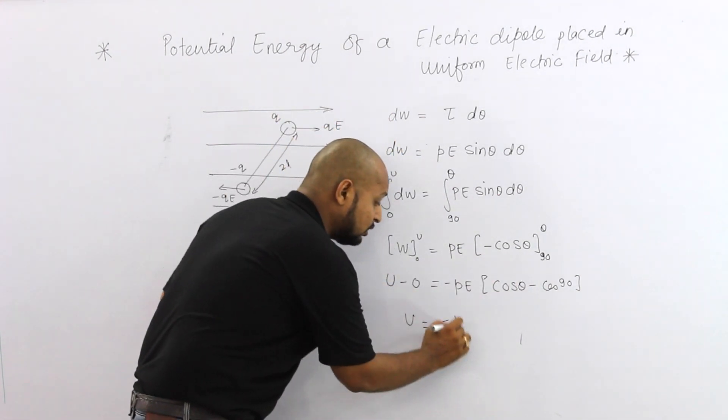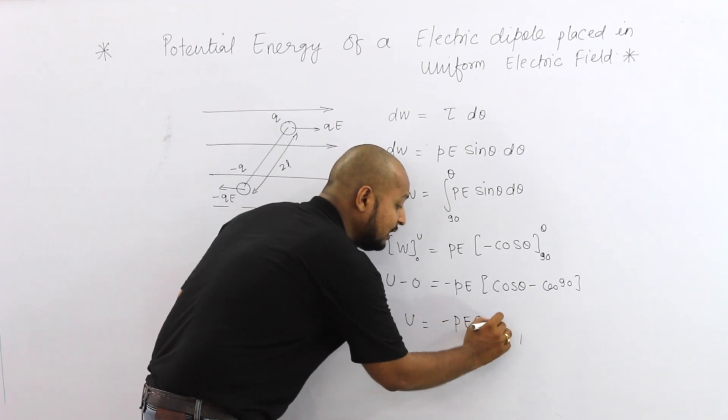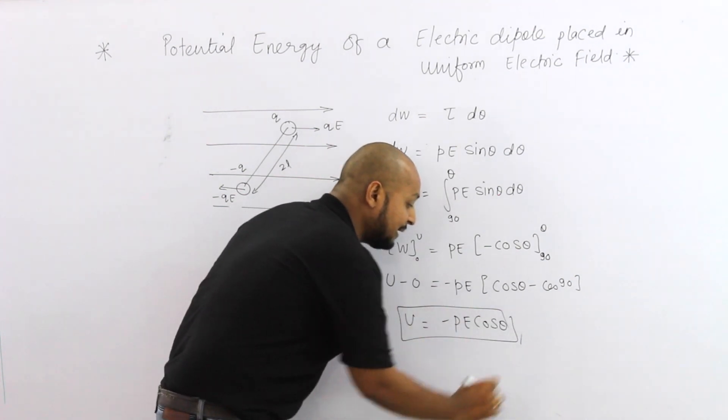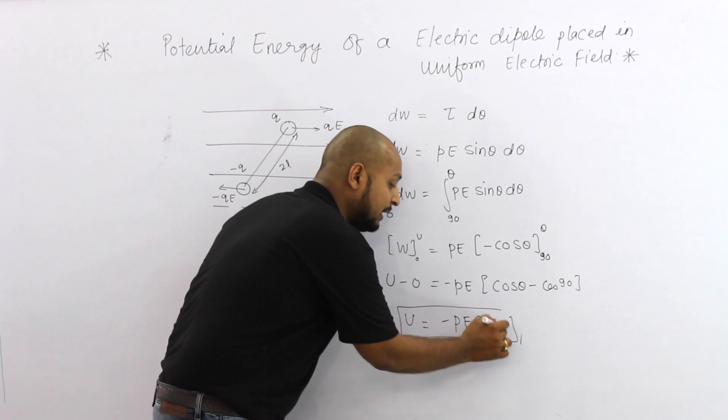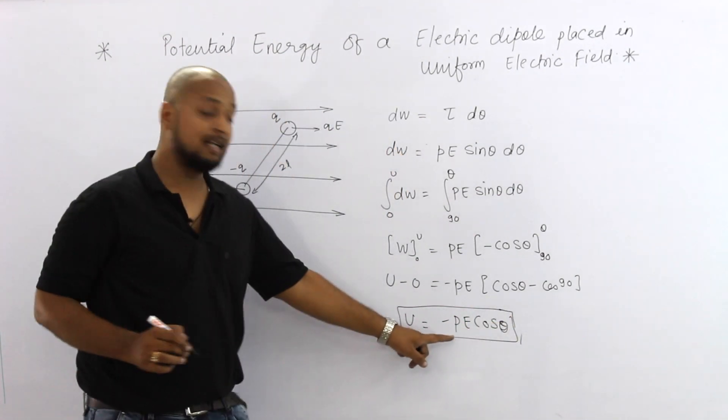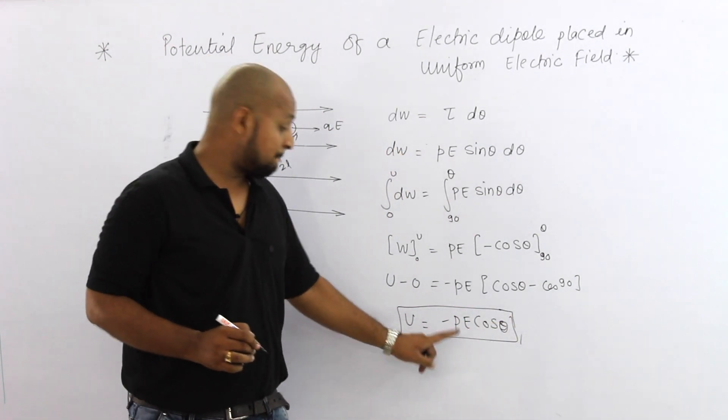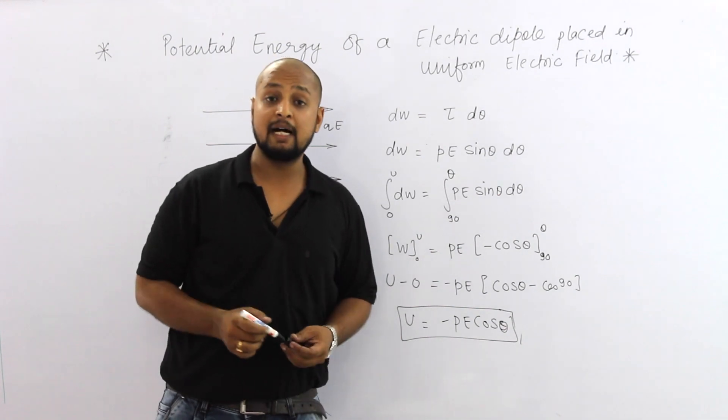If we see, U is equal to minus PE cos theta. This is my formula for electric potential energy. U equals minus PE cos theta.